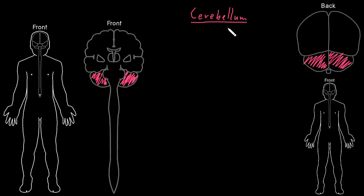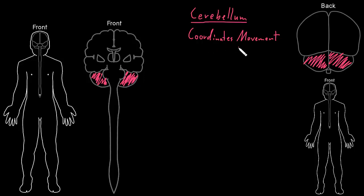The cerebellum does a number of different functions, but probably the most obvious thing that it does is it coordinates movement. It's pretty neat how it works with the other motor structures in the nervous system to coordinate movements, because the cerebellum really smooths out movements and makes them more accurate. Like if you're trying to touch something with your finger, the cerebellum plays a big role in your accuracy in your finger touching the object that you're shooting for. There are kind of three parts to how information travels into and out of the cerebellum to let it do its job of coordinating movements.